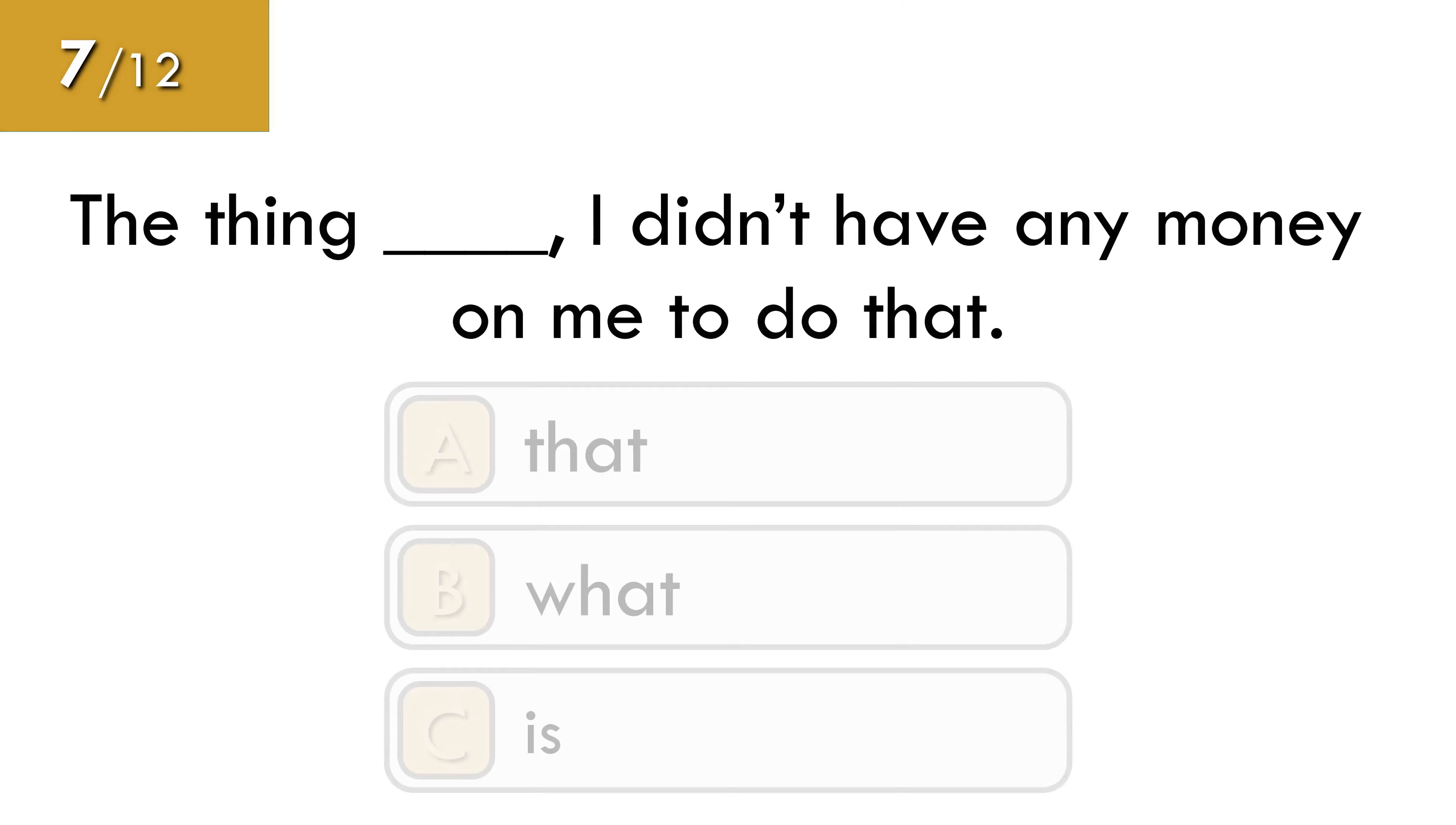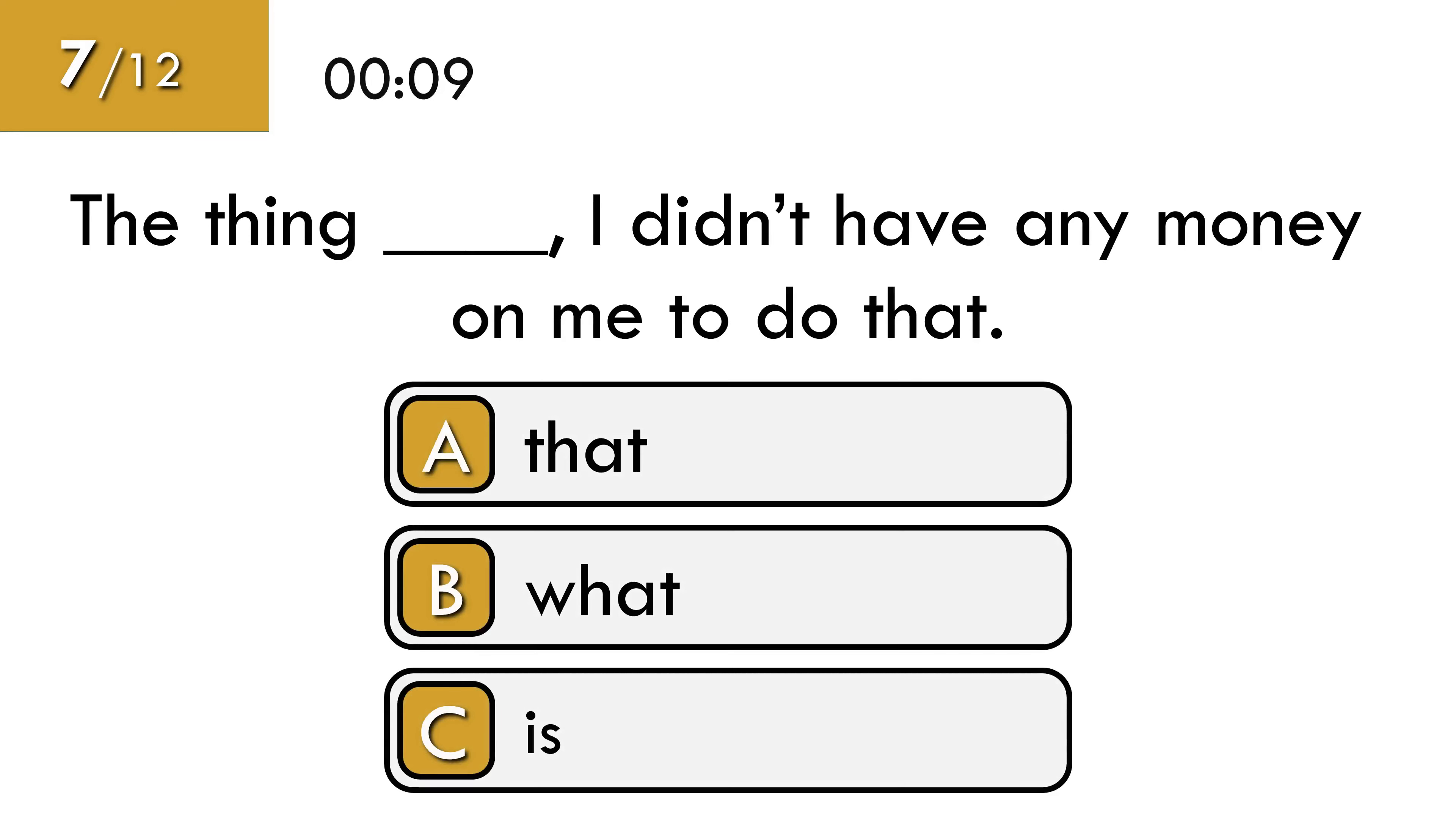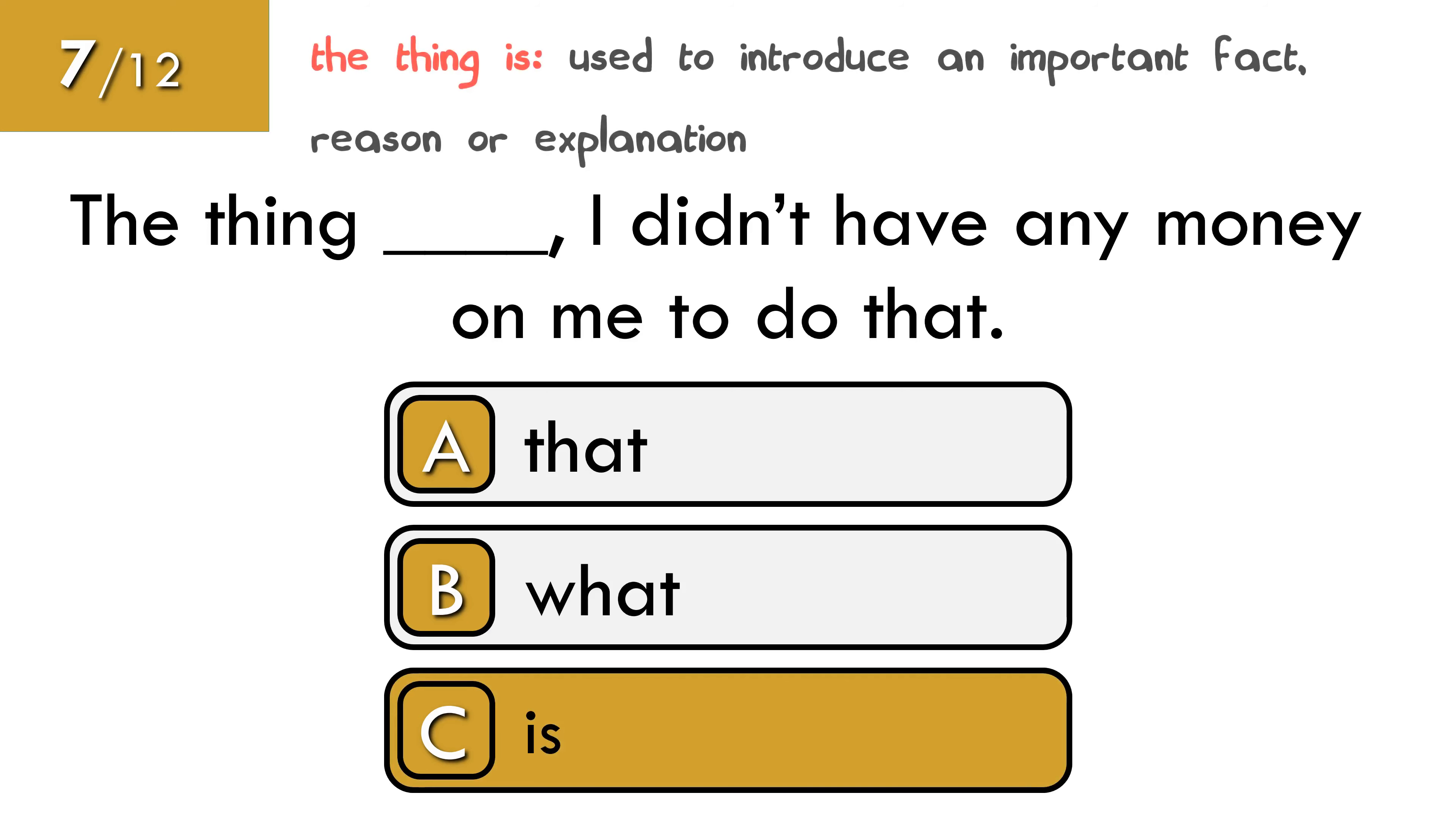Number 7. We use the phrase thing is to introduce an important fact, reason, or explanation. The thing is, I didn't have any money on me to do that.